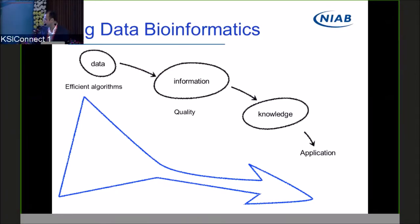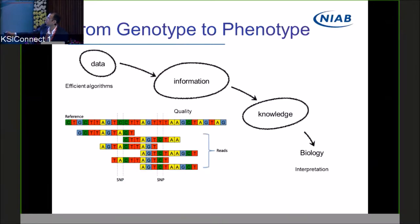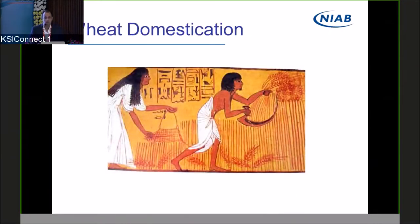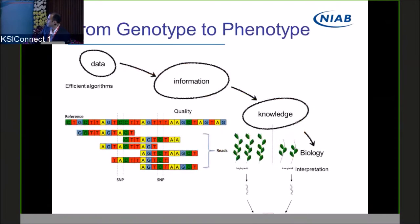That information is the first important step to then apply knowledge to a specific application. A typical example is doing genotype-to-phenotype studies, where a large number of samples are sequenced to define variants — moving from billions of reads into a few million SNP variants. It's important that those variants are true variants; that's where quality comes into play — no false positives. Those variants are just information; we then need to apply them to specific knowledge, for example to define a trait and make an association with that trait. To work at this level, we need to have a reference genome.